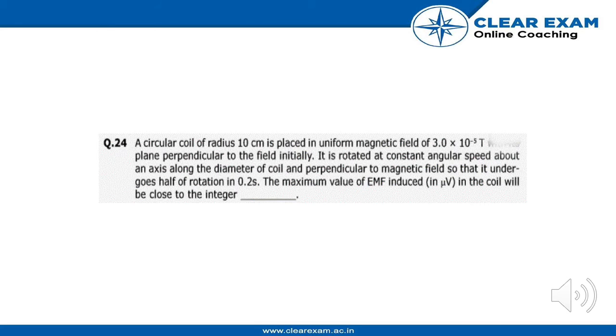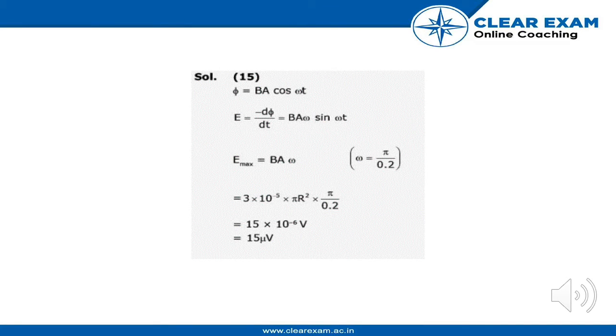Let's move to the answer. Now we have phi is equal to BA cos omega t, and E is equal to minus d phi by dt, which is equal to BA omega sin omega t.